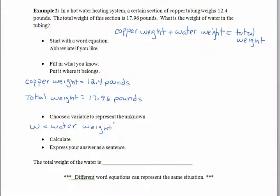And just like before, we'll fill in everything exactly where it belongs. So the copper weight is 12.4 plus the water weight. I don't know that. That's W. So the total weight equals, and the total weight, 17.96. Nothing is moving or changing locations. We're just filling in what we don't know and what we do know. The stuff we don't know has a variable. The things we do know have values.